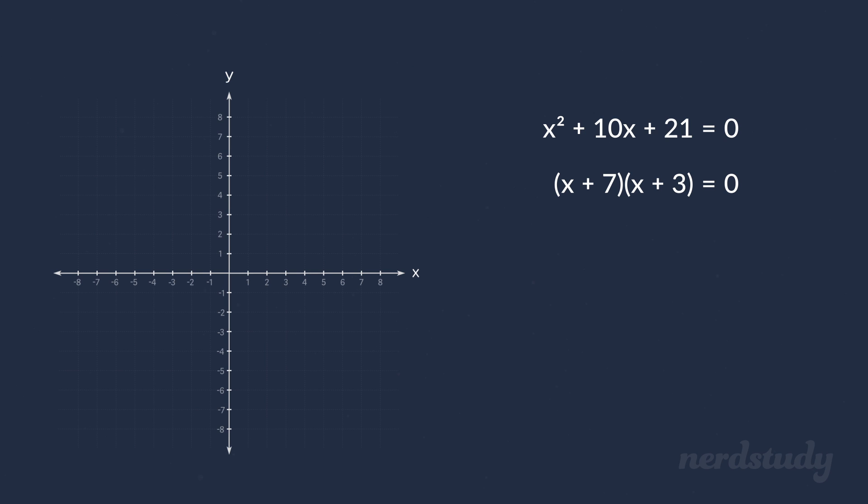Now we can interpret this equation as when x is equal to negative 3 or negative 7, y will be equal to 0. And since we see that the a in this equation is a positive, we know that the graph will look roughly like this with some adjustment in the vertex and the compression or stretch of it.